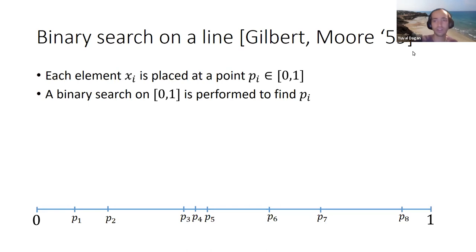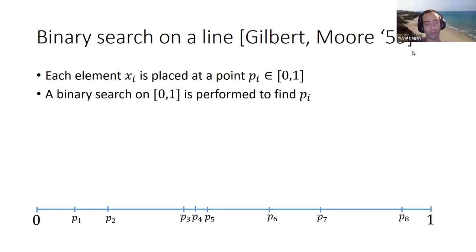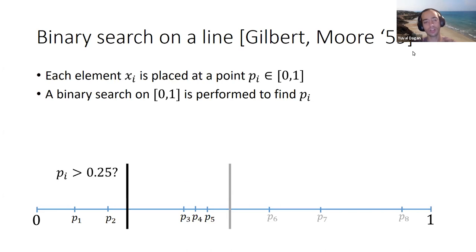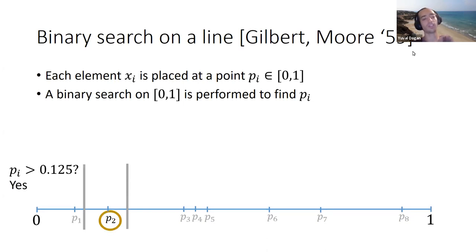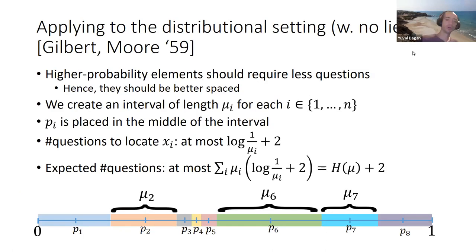The Gilbert-Moore binary search places each element x_i on the segment [0,1] at some point π_i, then performs a binary search to find the point corresponding to the element. For example, it asks whether the point is greater than 0.5 — Bob says no — then whether it's greater than 0.25 — no — then whether it's greater than 1/8 — Bob says yes — and now we know the object must be x2, lying at point p2.